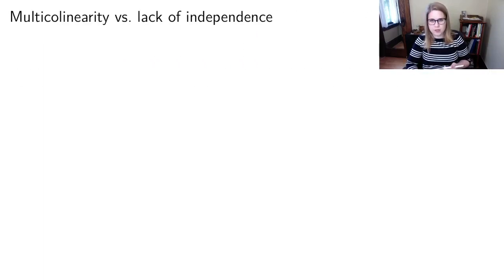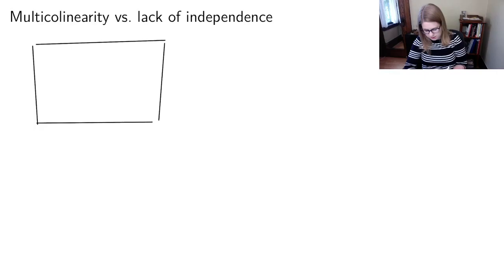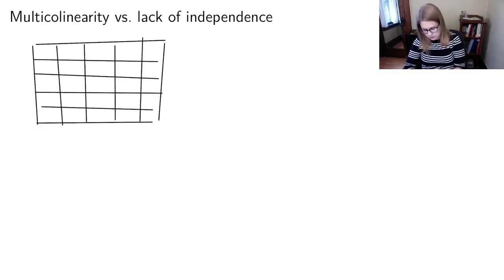So we talk about correlation between predictors, or sometimes we'll use the term multi-colinearity. And I find that students often get confused at this point in the semester between multi-colinearity and a lack of independence. So I'd like to talk about both of those. So if we have a rectangular data set, and hopefully it's tidy, so the rows are observations, and the columns are variables.